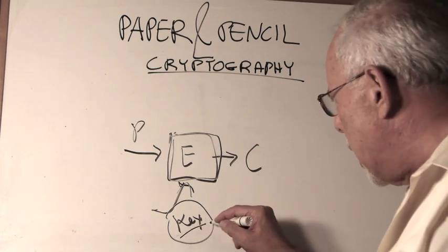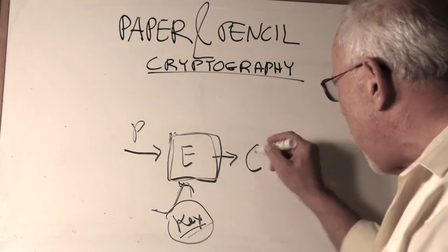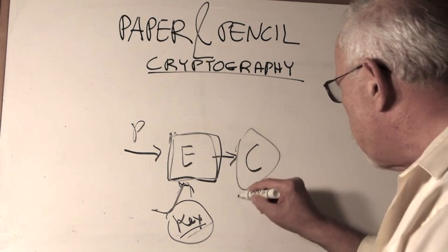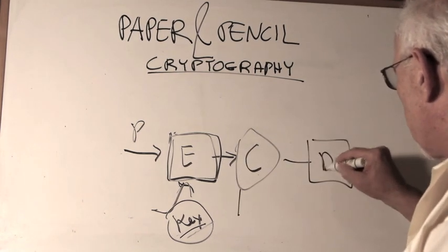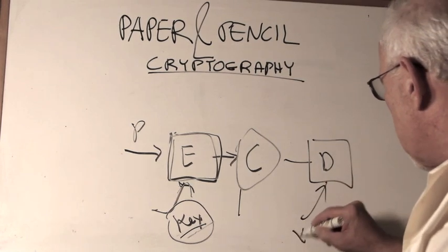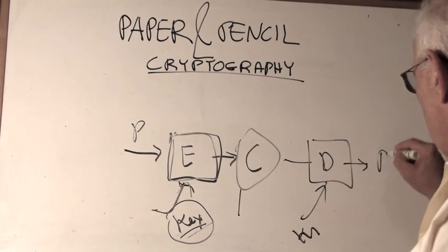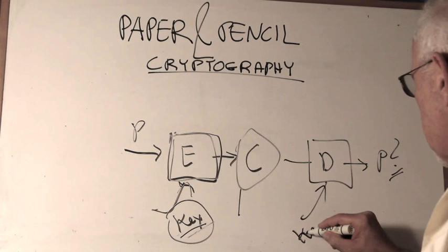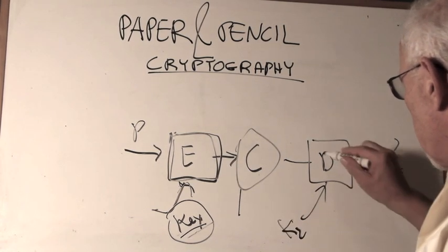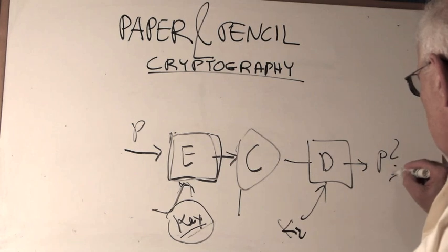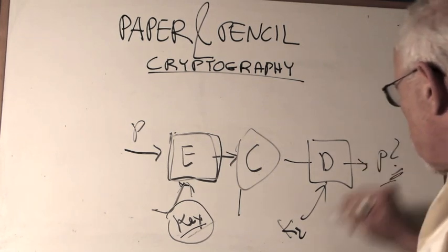When an adversary wants to crack the C, he tries one key. He goes here to the decryption box and puts one key and checks. Is this it? No. So he tries another key, key two, checks it out. Is this the encryption? No. Check another, etc.